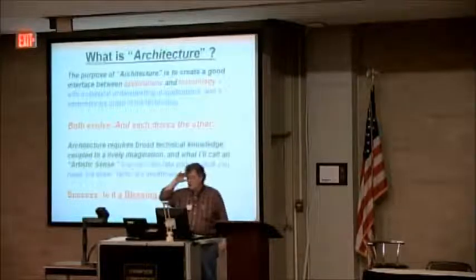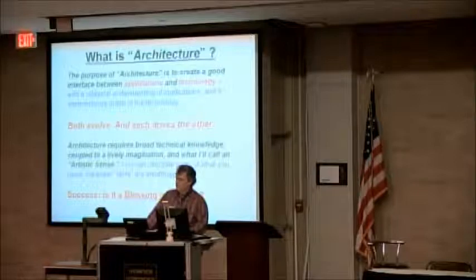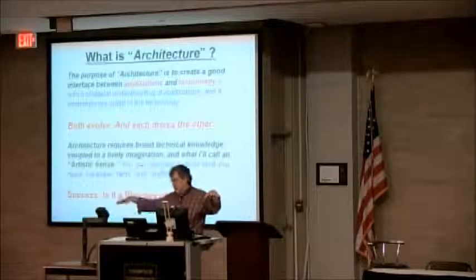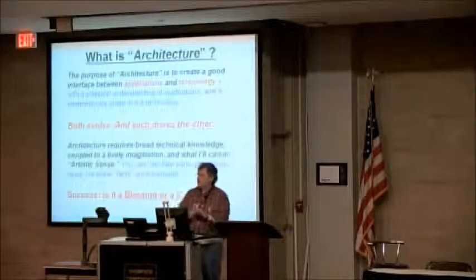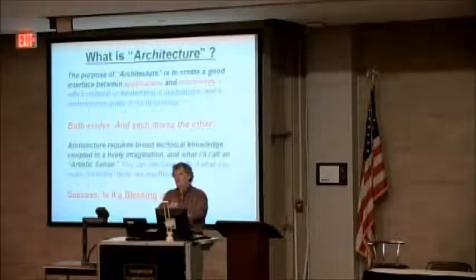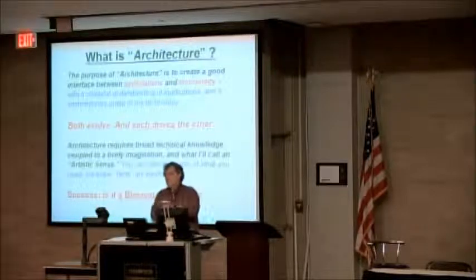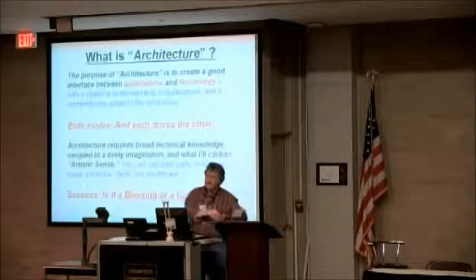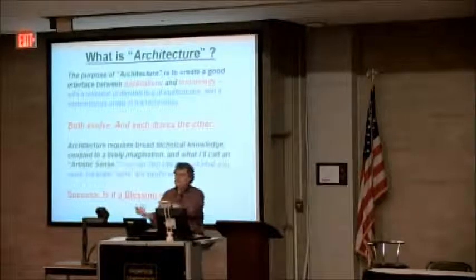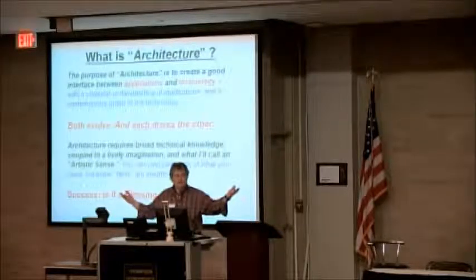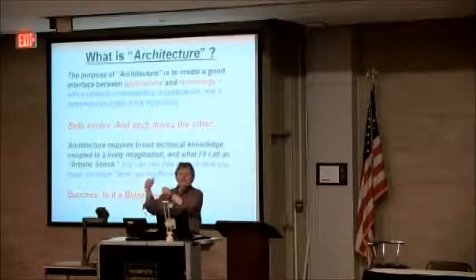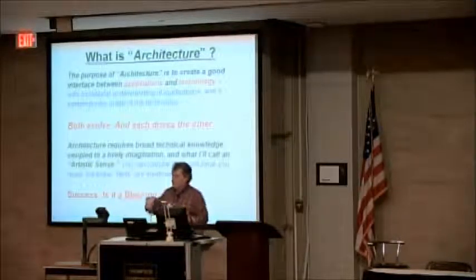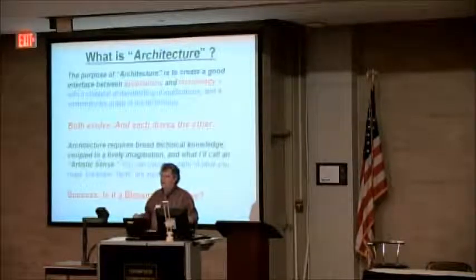And then I want to close by saying, what is architecture? And students should know this. Architecture creates an interface between applications of the day and the technology of the day. So you need a classical understanding of what those applications are. You need a contemporary grasp of the technology. The problem with success in this business, like IBM and Intel, is the ISAs were defined many decades ago. Technology has moved way forward, but you still have to be compatible. So a lot of the stuff you do is just you're doing it in an ancient instruction set when you could do it much better. But I've got to run these binaries. And both the applications and the technology evolve, and they both drive each other.